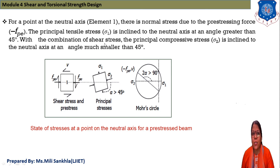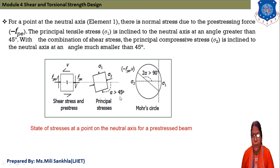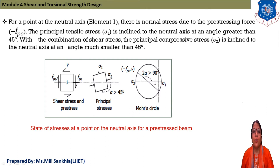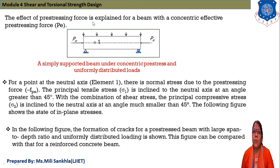Sigma-1 (principal tensile stress) makes an angle greater than 45 degrees with the neutral axis. The combination of shear stress gives principal compressive stress sigma-2 inclined to the neutral axis at an angle much smaller than 45 degrees. This is the representation of fpe, sigma-1, and sigma-2 with respect to our Mohr's circle.